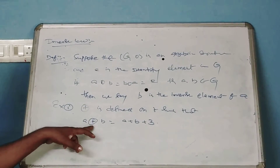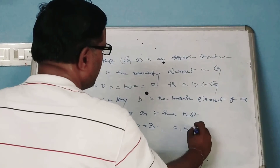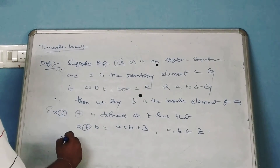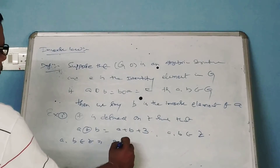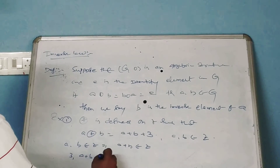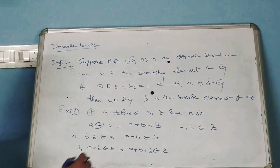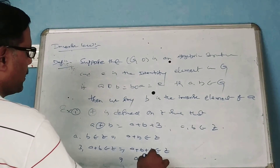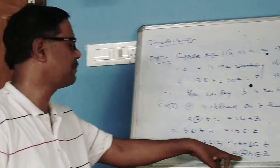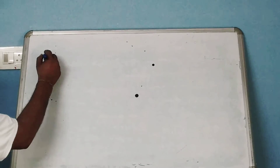From the beginning, we check whether this is an algebraic structure or not. First of all, A, B belongs to Z. We know that A, B belongs to Z implies A plus B belongs to Z. Since 3 also belongs to Z, A plus B plus 3 belongs to Z. This implies A circular-plus B belongs to Z. Therefore, circular-plus is a binary operation on Z.